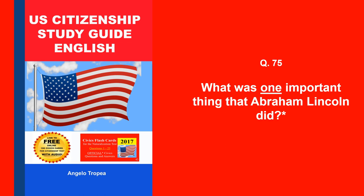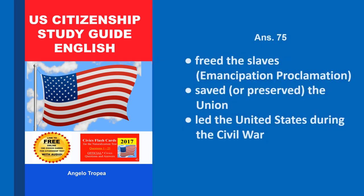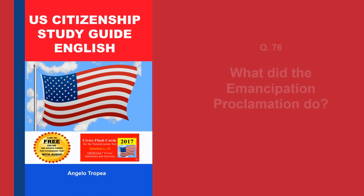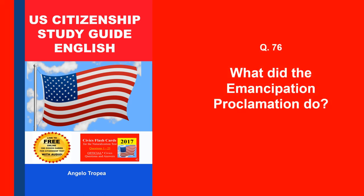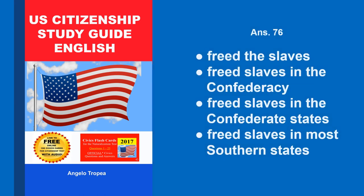What was one important thing that Abraham Lincoln did? Freed the slaves, Emancipation Proclamation, saved or preserved the Union, led the United States during the Civil War. What did the Emancipation Proclamation do? Freed the slaves, freed slaves in the Confederacy, freed slaves in the Confederate States, freed slaves in most southern states.